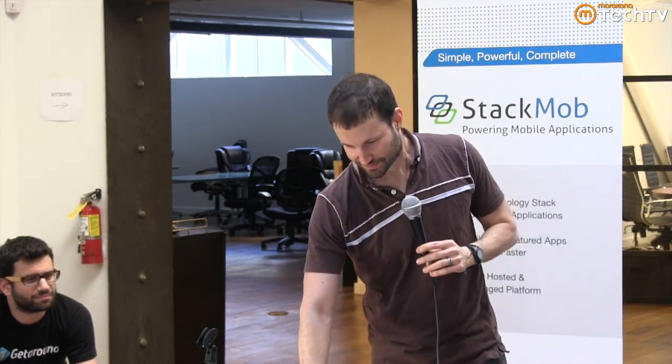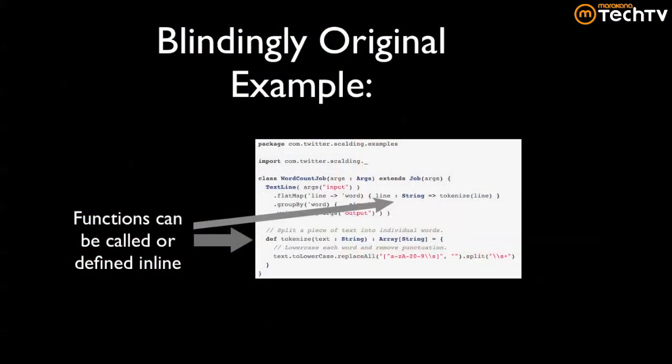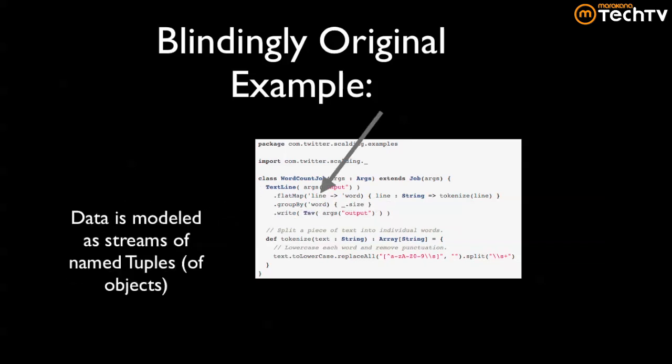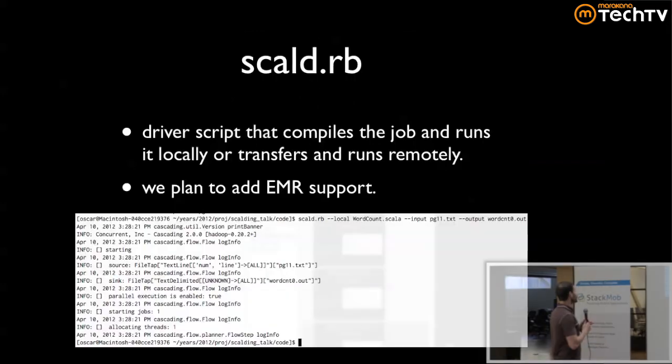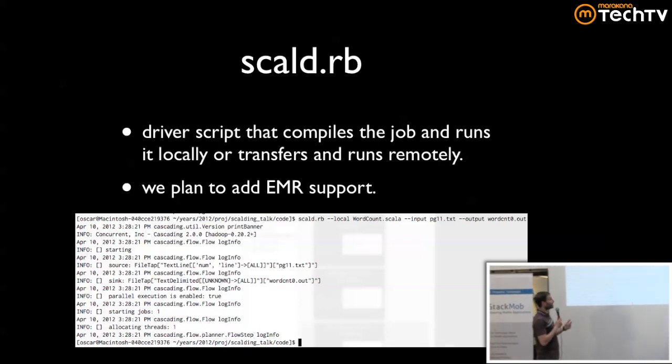You can call these functions and define them inline or call any function you already wrote. The data model is a stream of named tuples. You can picture this as always calculating with a spreadsheet — you've got code that tells you how to modify the spreadsheet, like column A1 mapped onto column A2. That's the difference between Scalding and the standard Scala Collections API.